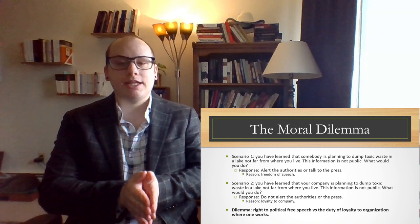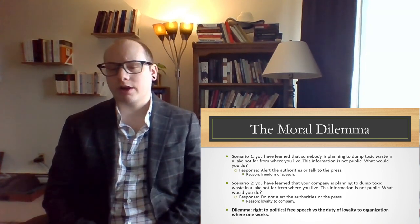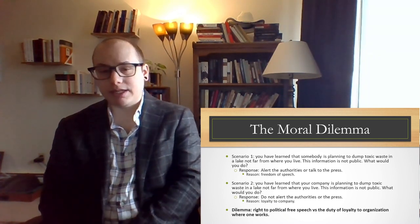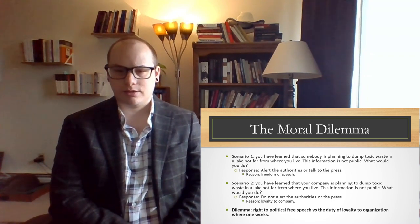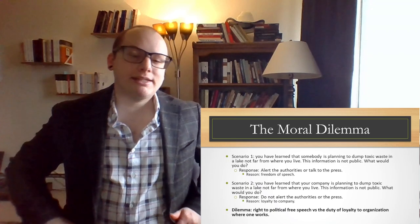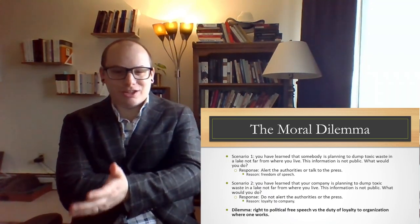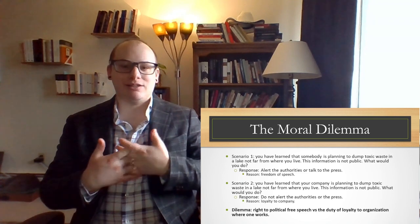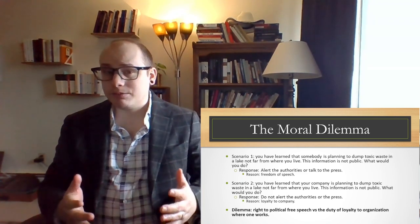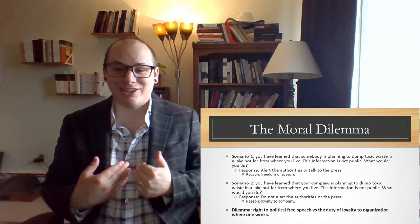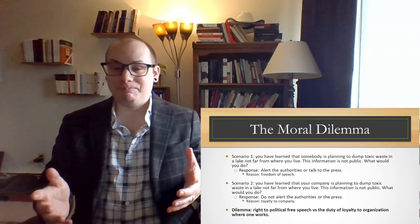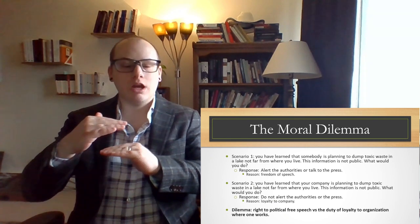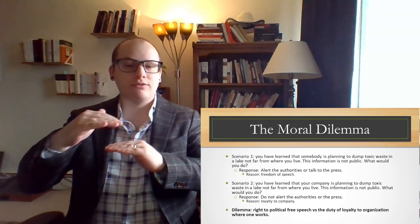Now scenario two: you've learned that your company is planning to dump toxic waste in a lake not far from where you live. This information is not public. What would you do? Well, if your reason is loyalty to company, then you do not alert the authorities or the press. Now this might seem extreme. Who in the world is going to not alert the authorities or the press when your company is dumping toxic waste in a lake? It's like saying if I knew that my son was going to go to school and try to shoot up the school, I have a certain kind of loyalty to my son, but I should do whatever is required to stop my son from doing that. There's a certain threshold where what is the right thing to do trumps the kind of loyalties you have.